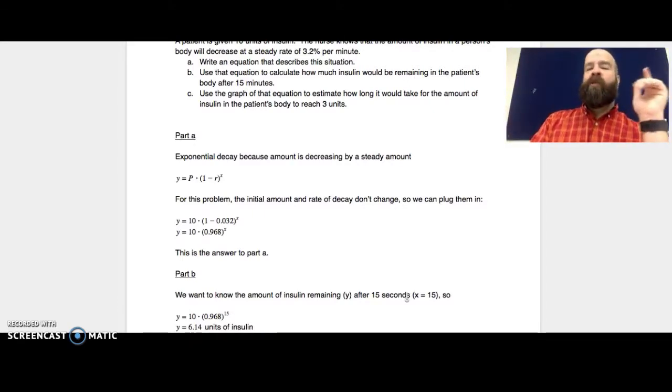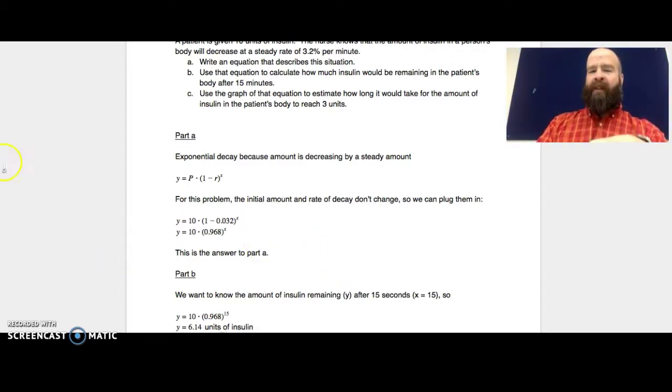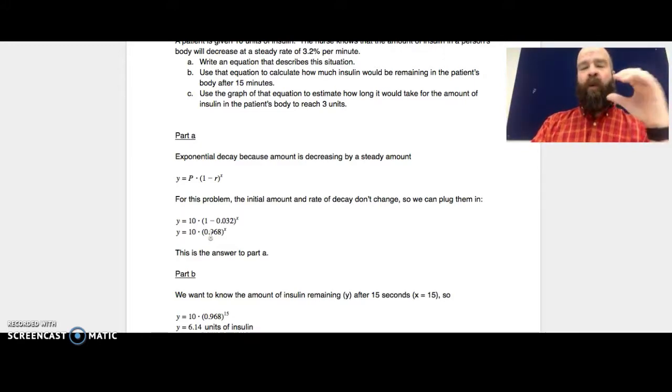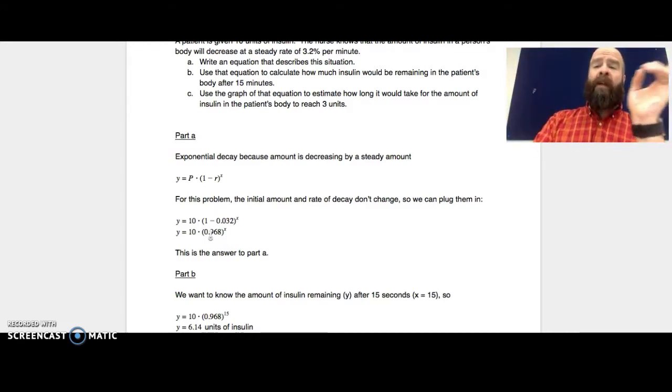So part C asks that you use the graph of that equation to estimate how long it would take for the amount of insulin in the patient's body to reach three units. So what I would be looking for is basically to take this equation right here, and I would be looking to see what would make the y equal to three, because the y represents the number of units of insulin in the patient's body. Now we don't know how to solve for this algebraically yet. We haven't learned how to get x out of an exponent. We don't know how to do that yet. So what we're going to do is estimate using the graph.